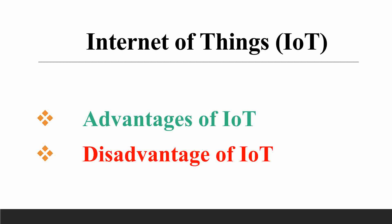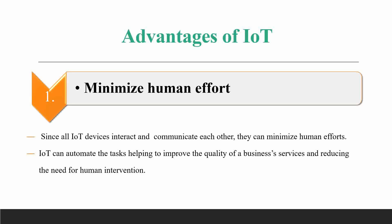IoT, or Internet of Things, refers to the interconnection of smart devices used for sharing information over a network. We will go through the advantages and disadvantages of IoT one by one.